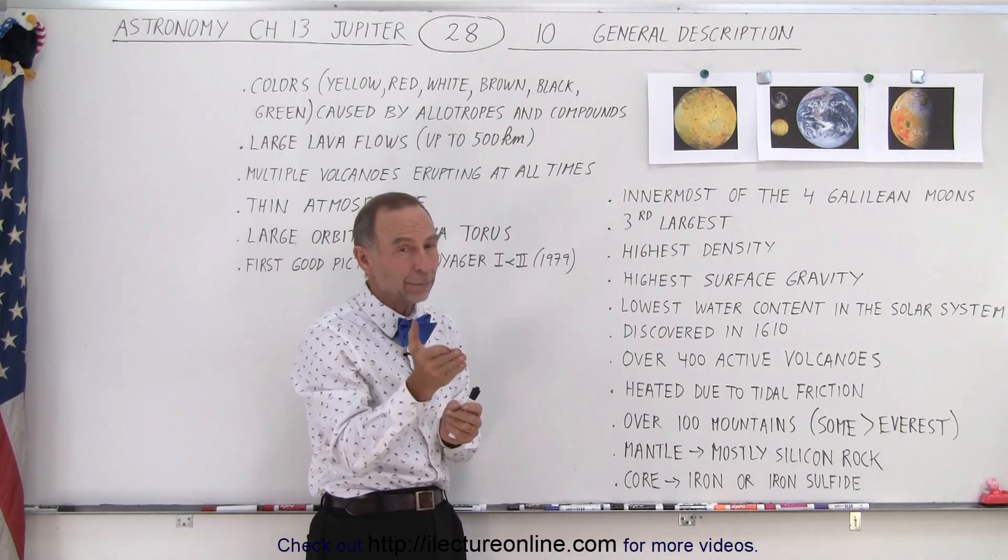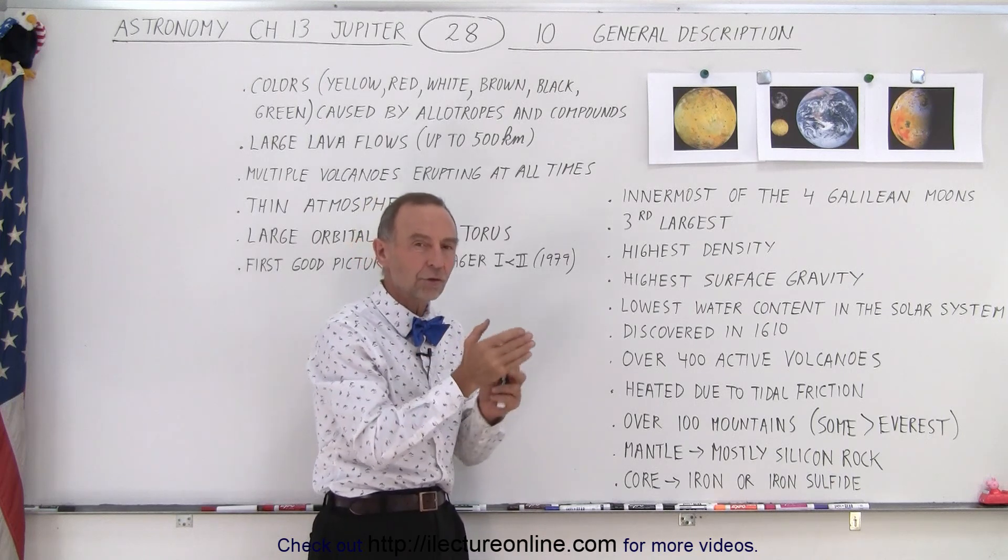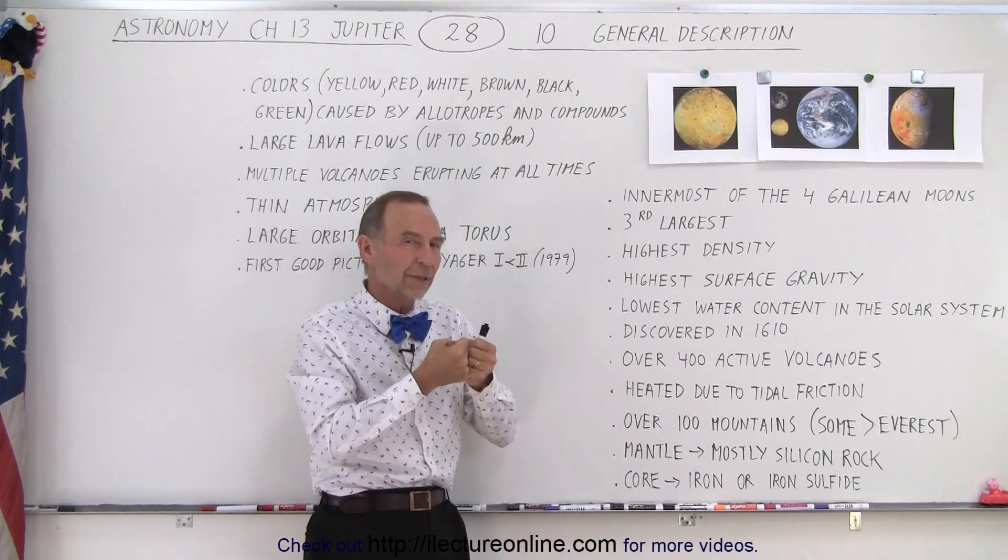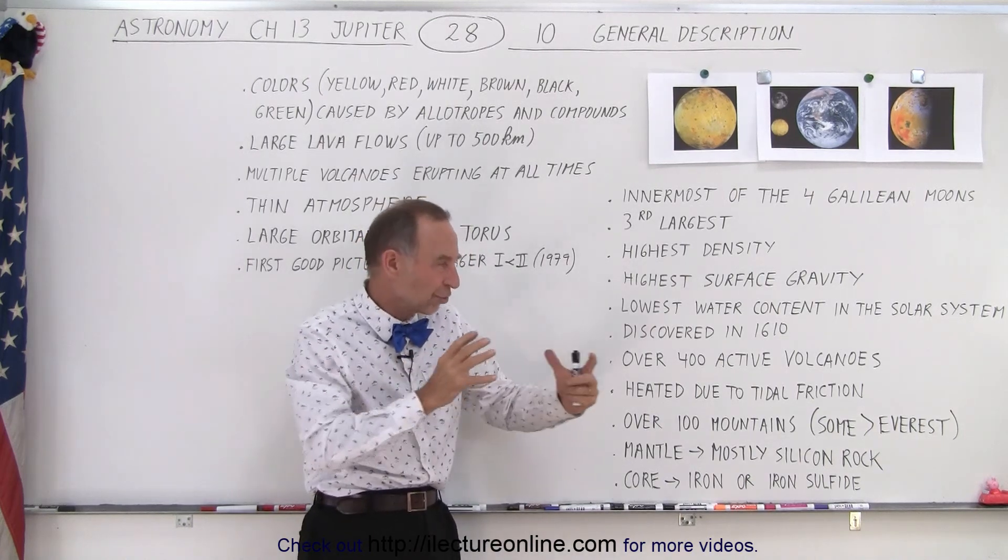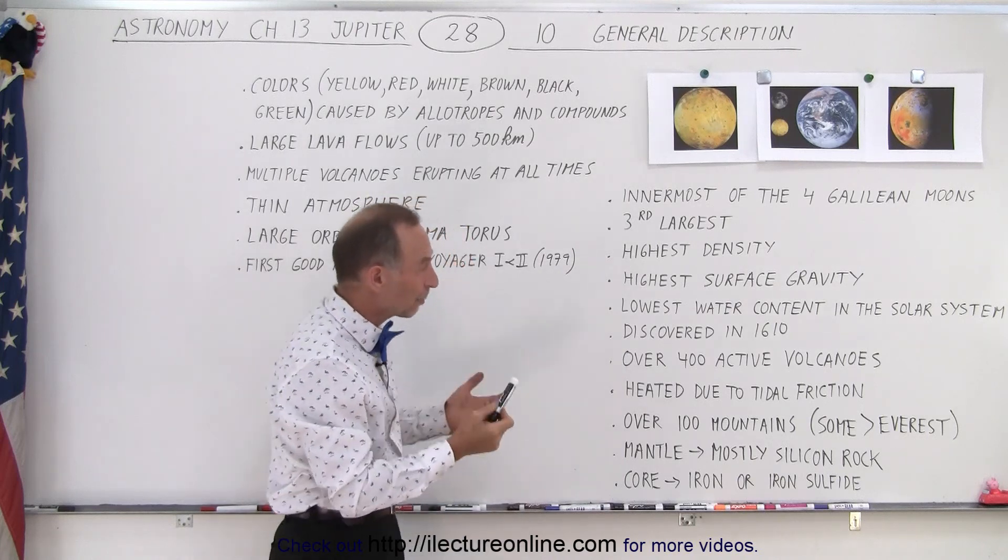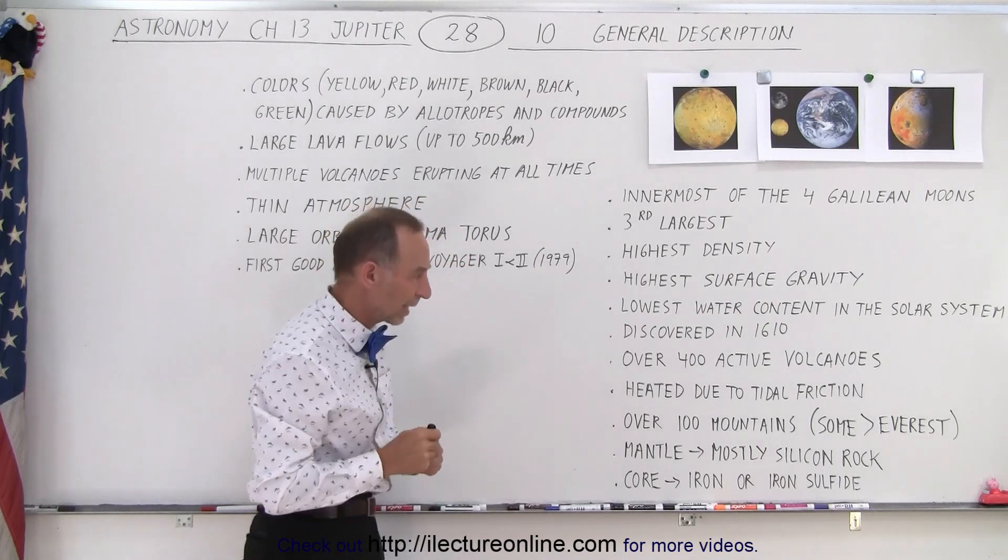So that pull that constantly changes is due to the synchronization. And also, since it's not a perfectly elliptical orbit, as it gets closer to Jupiter, the forces become stronger. As it's a little further away from Jupiter, the forces become a little bit weaker. And that also tends to stretch and pull the moon, causing all that frictional heat. And that's why it is so volcanically active.